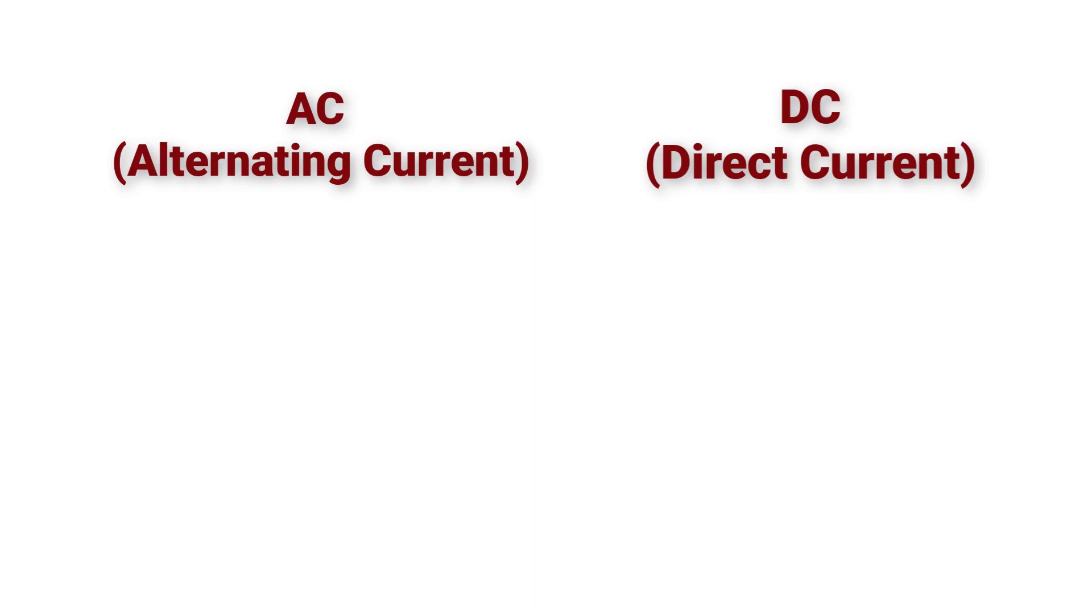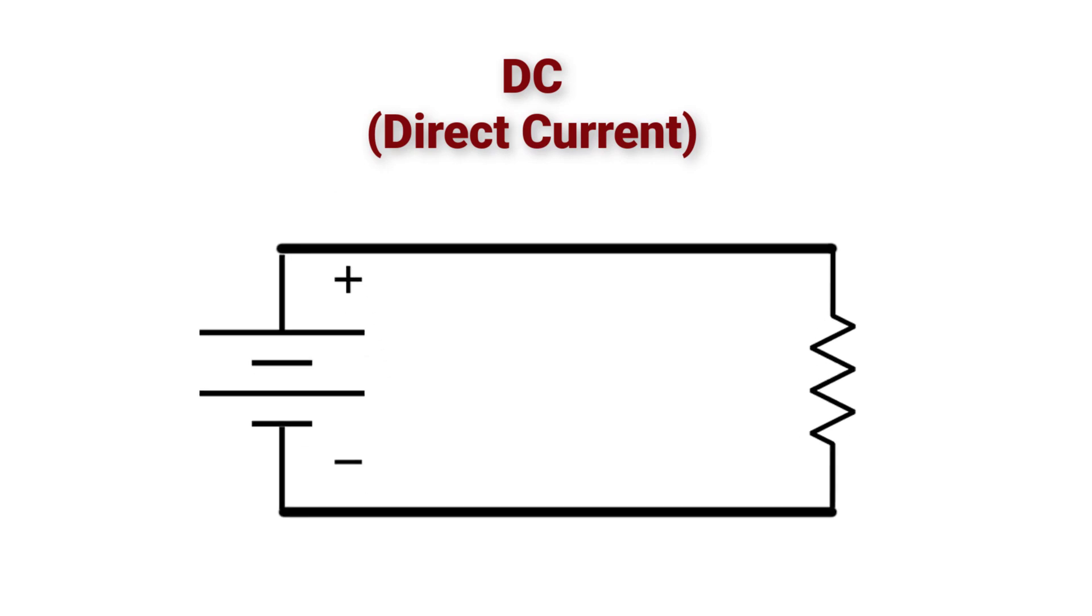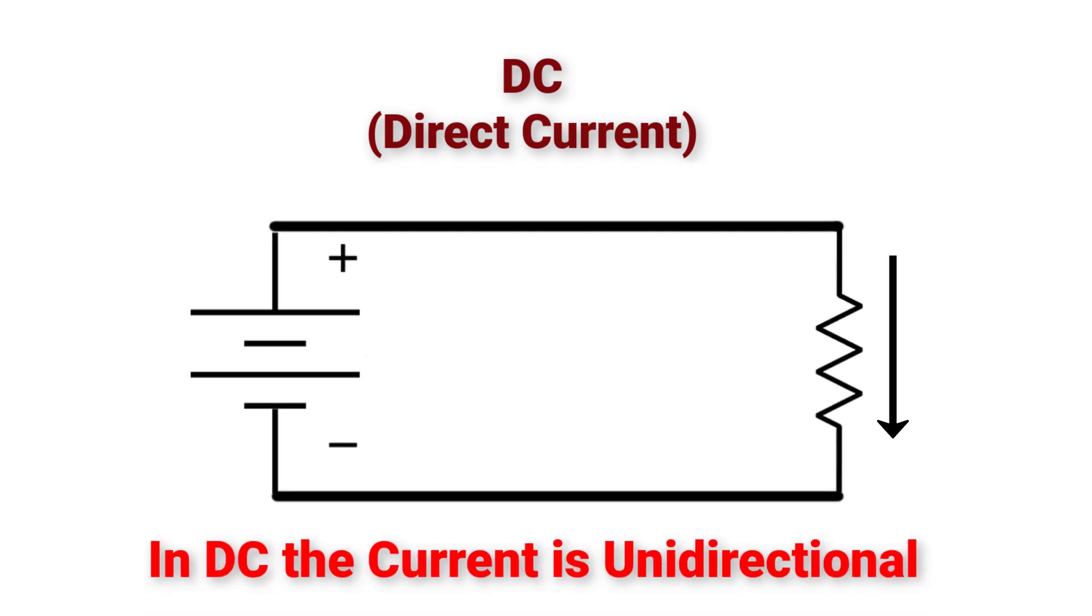In electricity, we have two different forms of current. The first type is DC or direct current. Here, the current is unidirectional, which goes only in one way, from the positive terminal of a source to the negative terminal through the circuit.